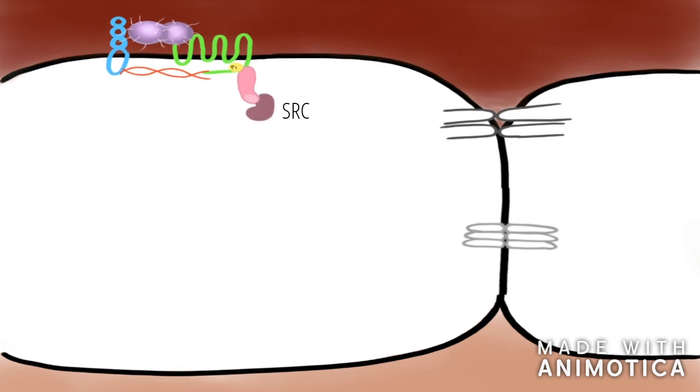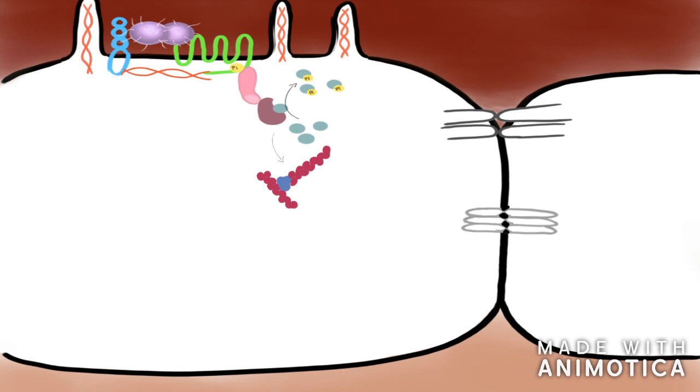One of the domains of SRC, named the SH3 domain, is attracted to a proline-rich region in the beta-arrestin. Now that SRC is attracted, it becomes activated by displacing the SH3 domain that normally keeps the kinase in an incompetent state. The SRC activation has two consequences.